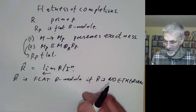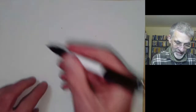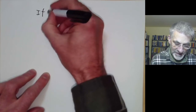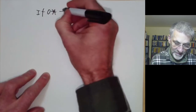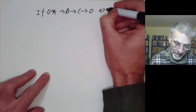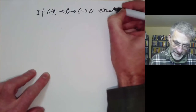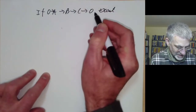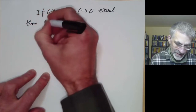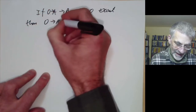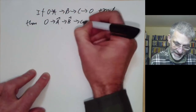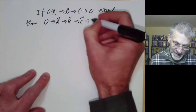The first step is to show that if 0 → A → B → C → 0 is exact — where these are all R-modules — then 0 → Â → B̂ → Ĉ → 0 is exact.